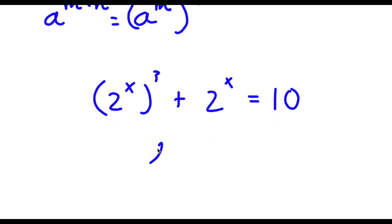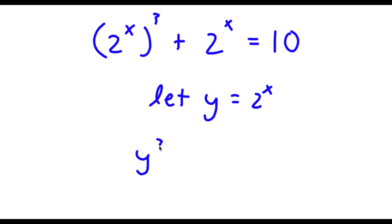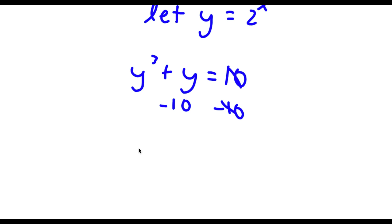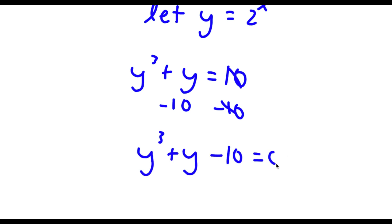Now I'm going to let y equal 2 to the power of x. So now I have y to the power of 3 plus y equals 10. If I subtract 10 on both sides I get y to the power of 3 plus y minus 10 is equal to 0.